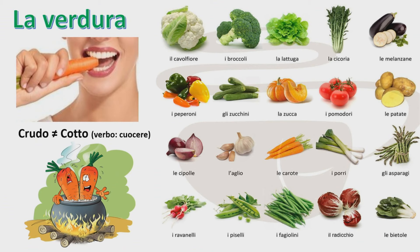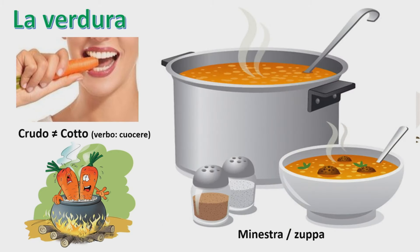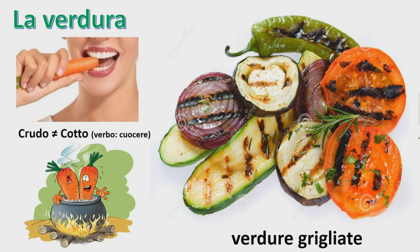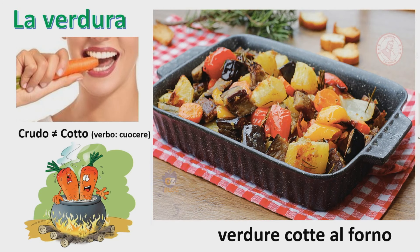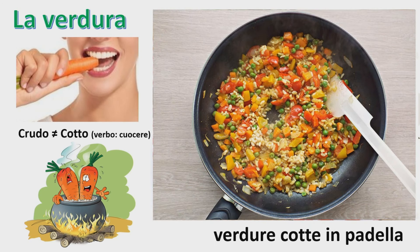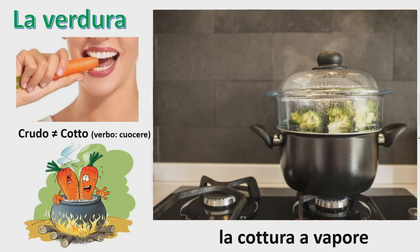Se vogliamo cuocere la verdura, possiamo preparare un piatto di minestra o di zuppa. Possiamo anche mangiare le verdure grigliate oppure al forno. Possiamo anche cuocere le verdure in padella. E un altro tipo di cottura è la cottura a vapore.